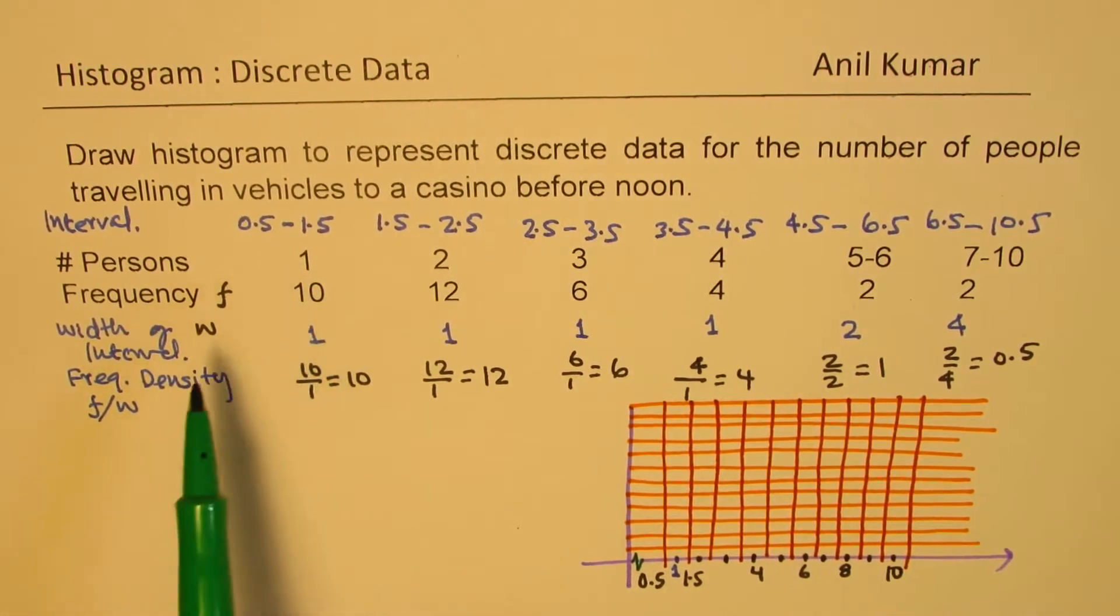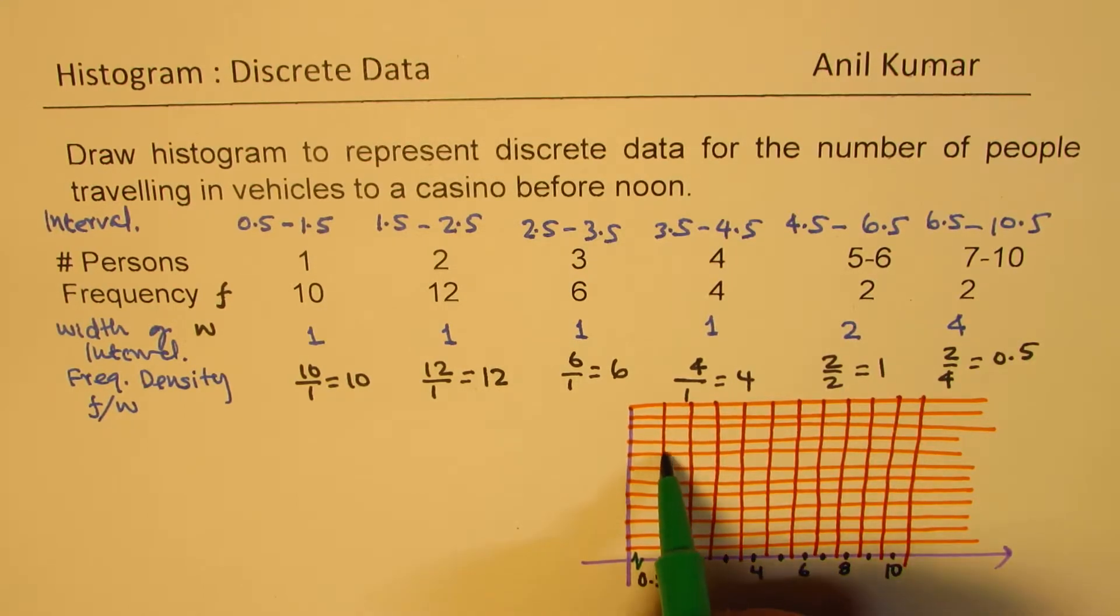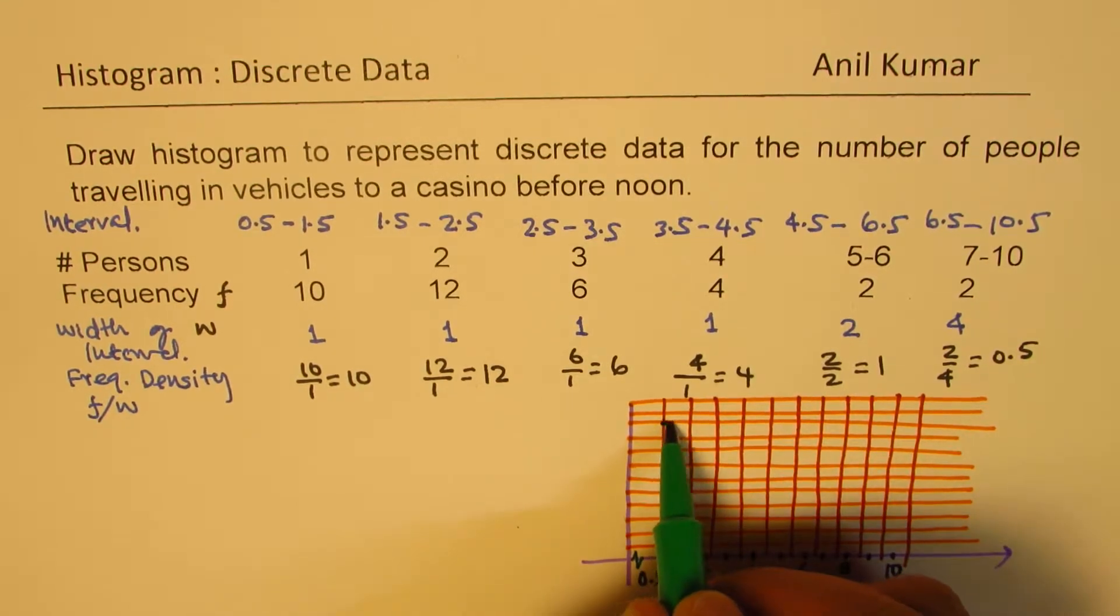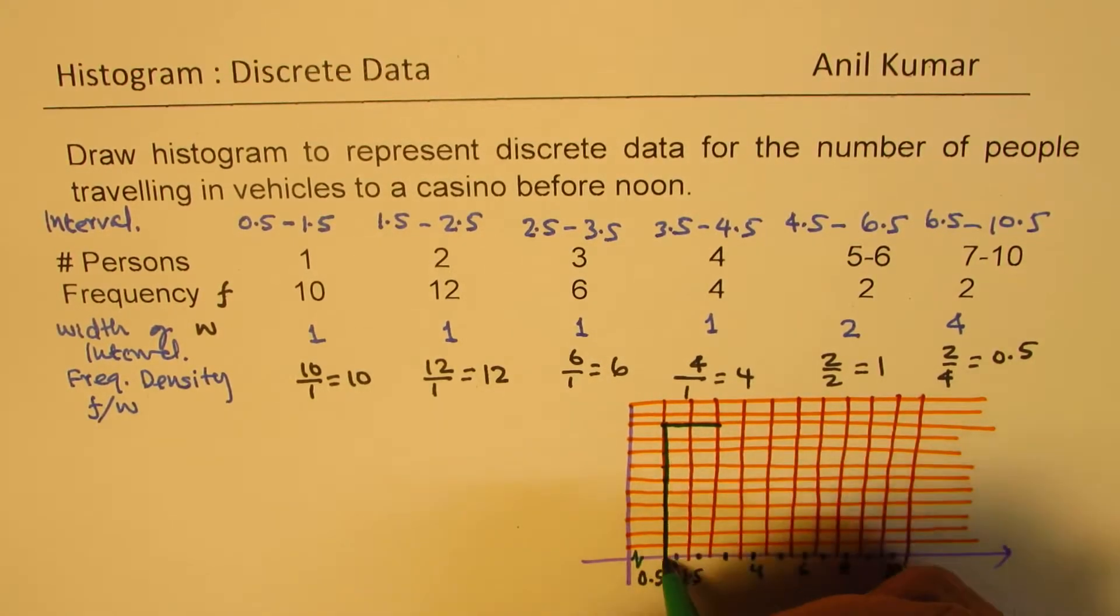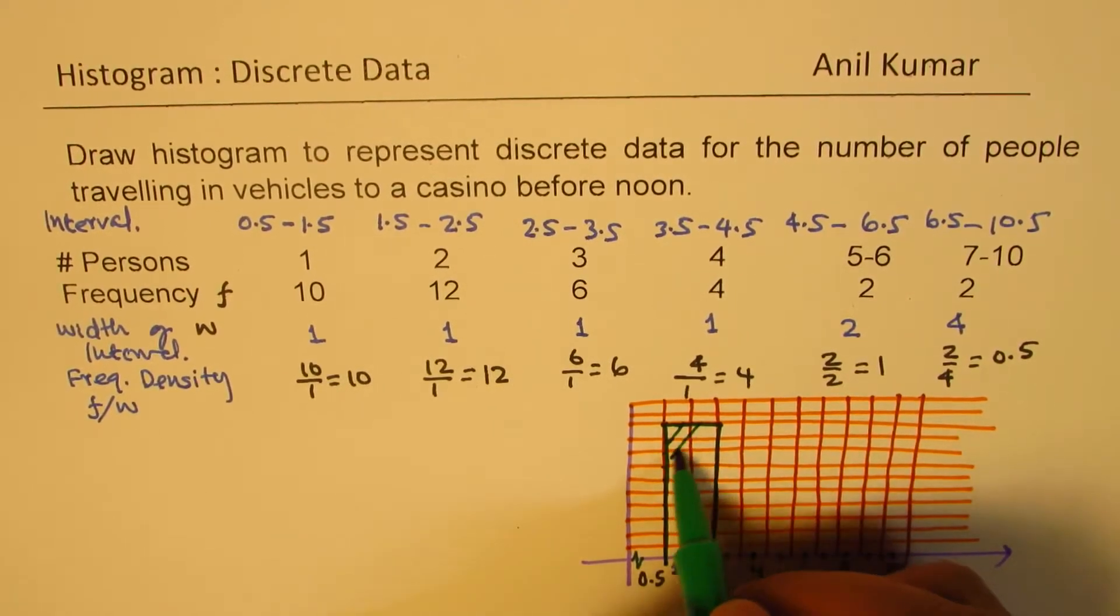So for 1, the frequency density is 10 and it will go from, so we get 1, 2, 3, 4, 5, 6, 7, 8, 9, 10. So that is 1 for us. Is that clear to you? So that becomes 1 for us.